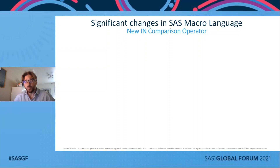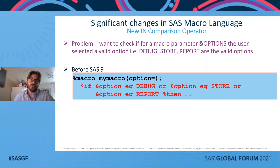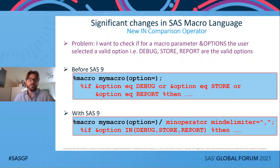Another interesting improvement in SAS macro is the availability of the boolean IN operator. For example, assume you want to check in your macro if the user has correctly specified a required parameter, meaning the selected parameter has a valid and expected value. Before SAS 9, you would need to check each individual possible value with an OR operator. Starting with SAS 9, you can now make use of the IN operator and therefore shorten and simplify your code.